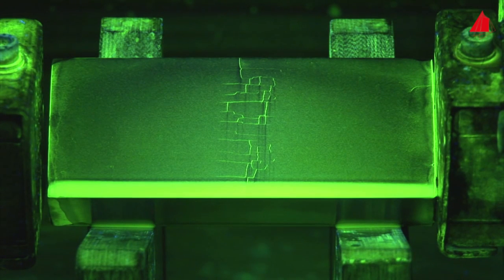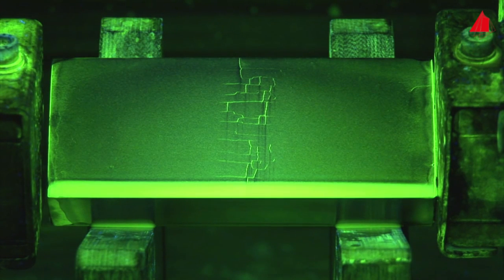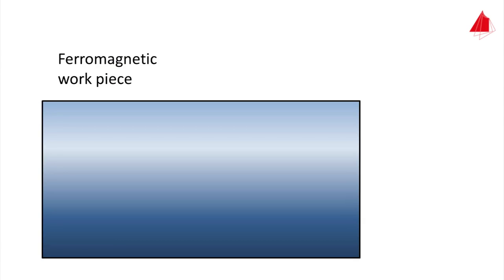The particles run off in areas free from defects, and they are attracted and clustered near defects. This workpiece shows a whole array of cracks. The basic principle is to magnetize a ferromagnetic workpiece parallel to its surface, as shown in the sectional view.